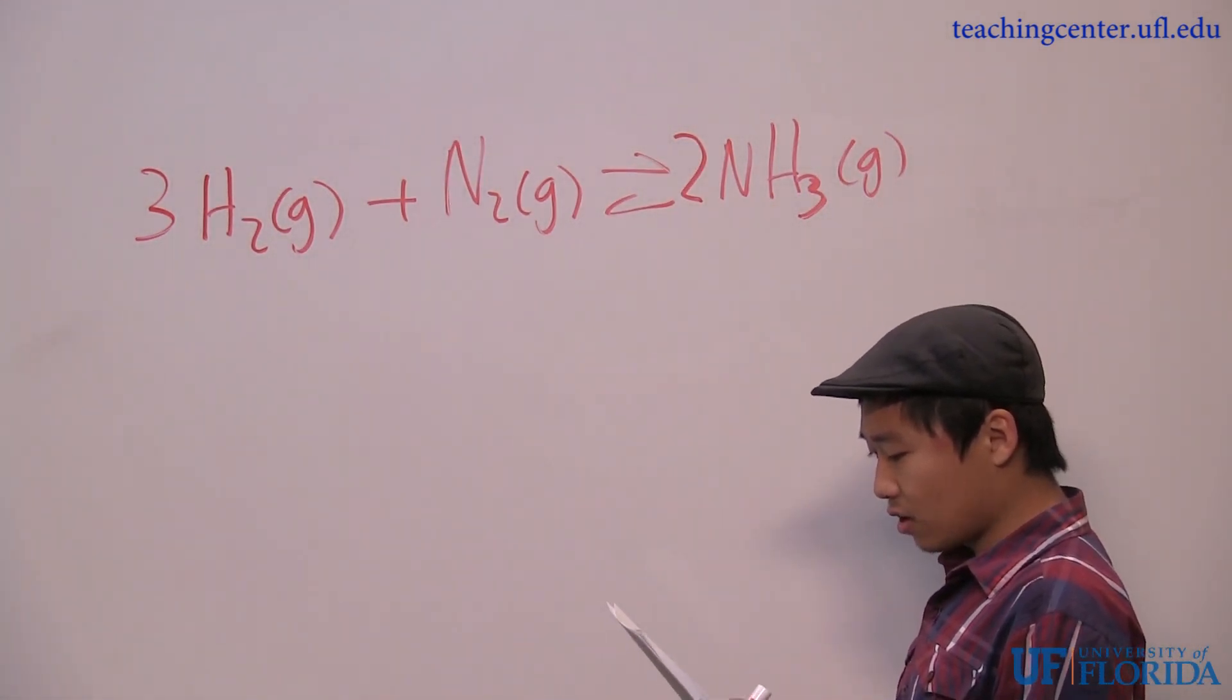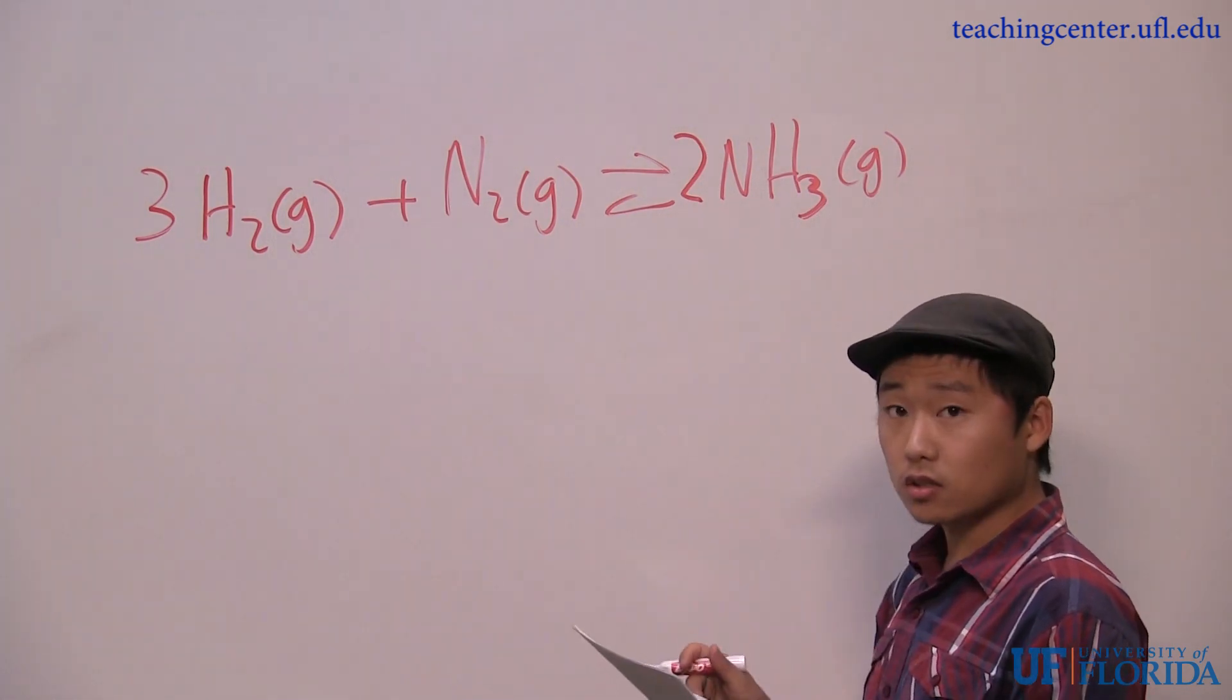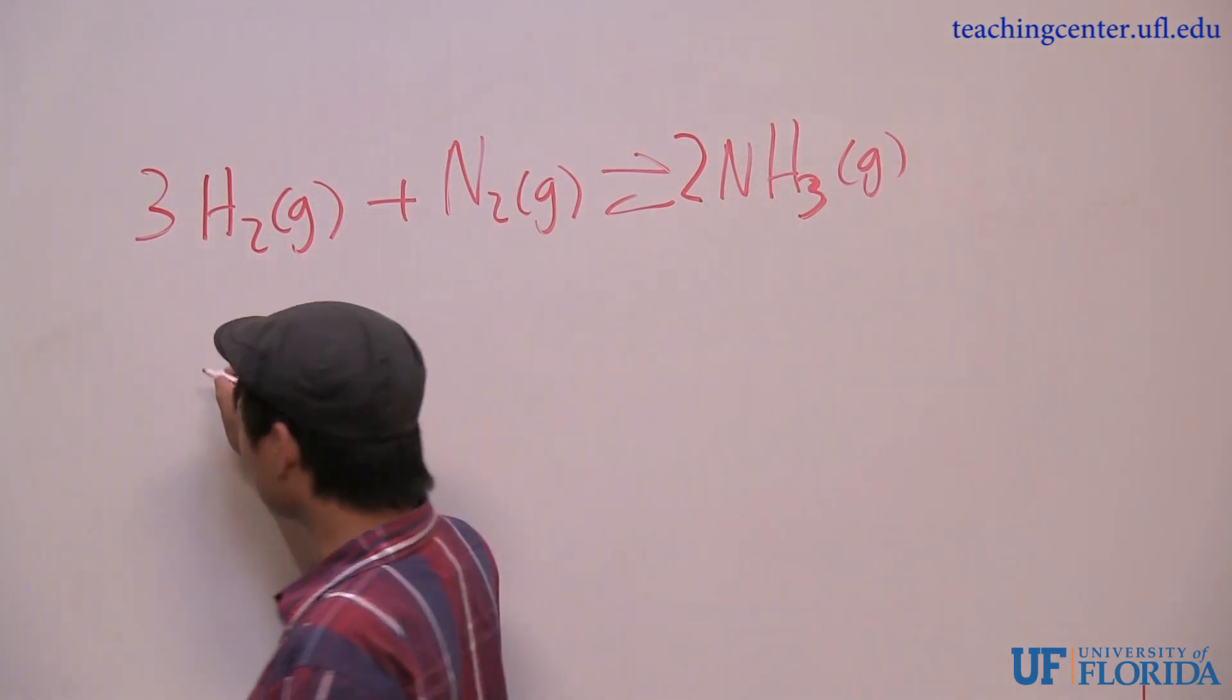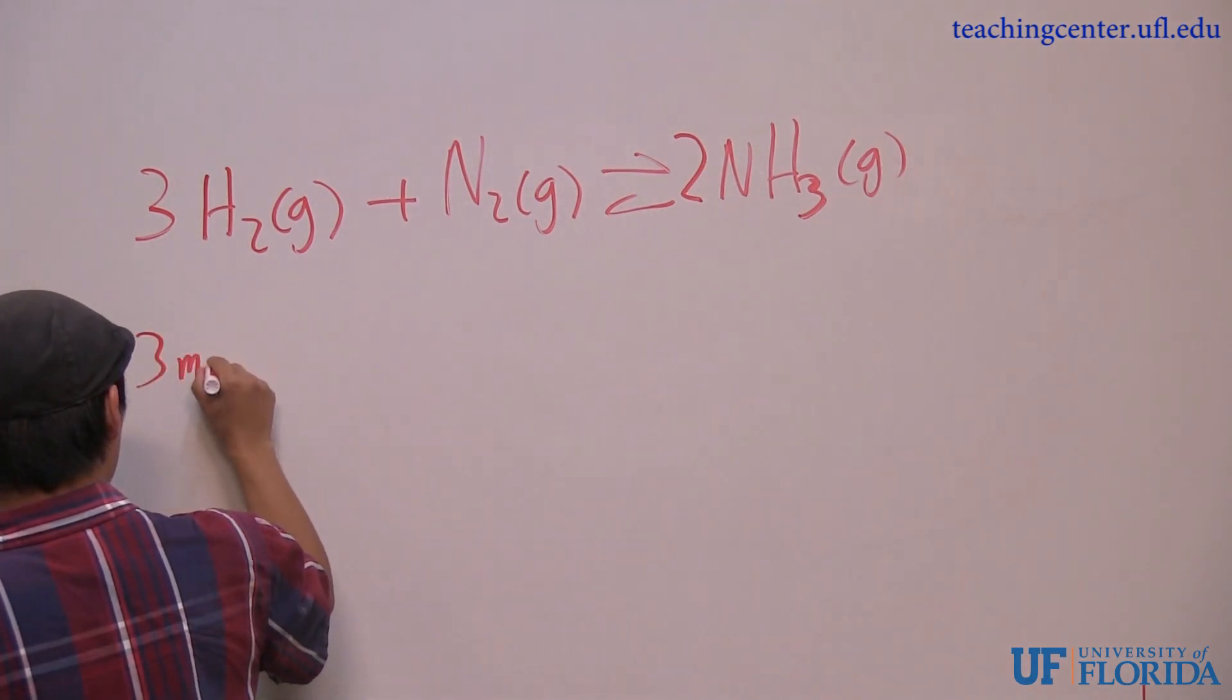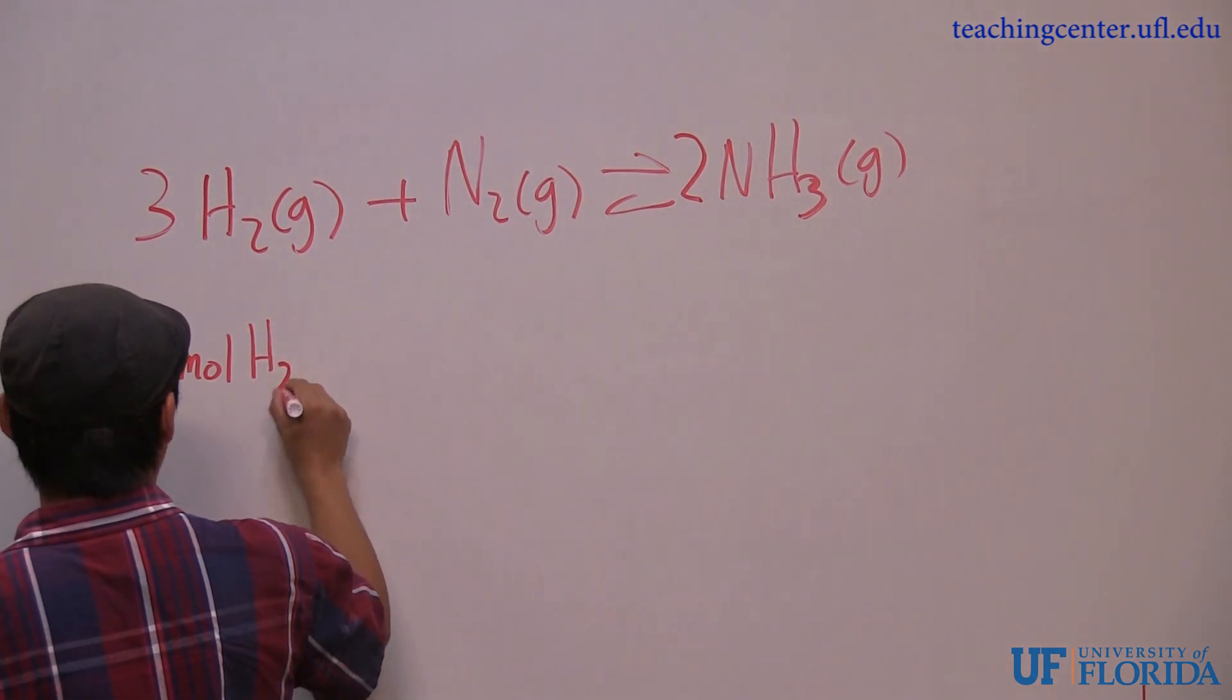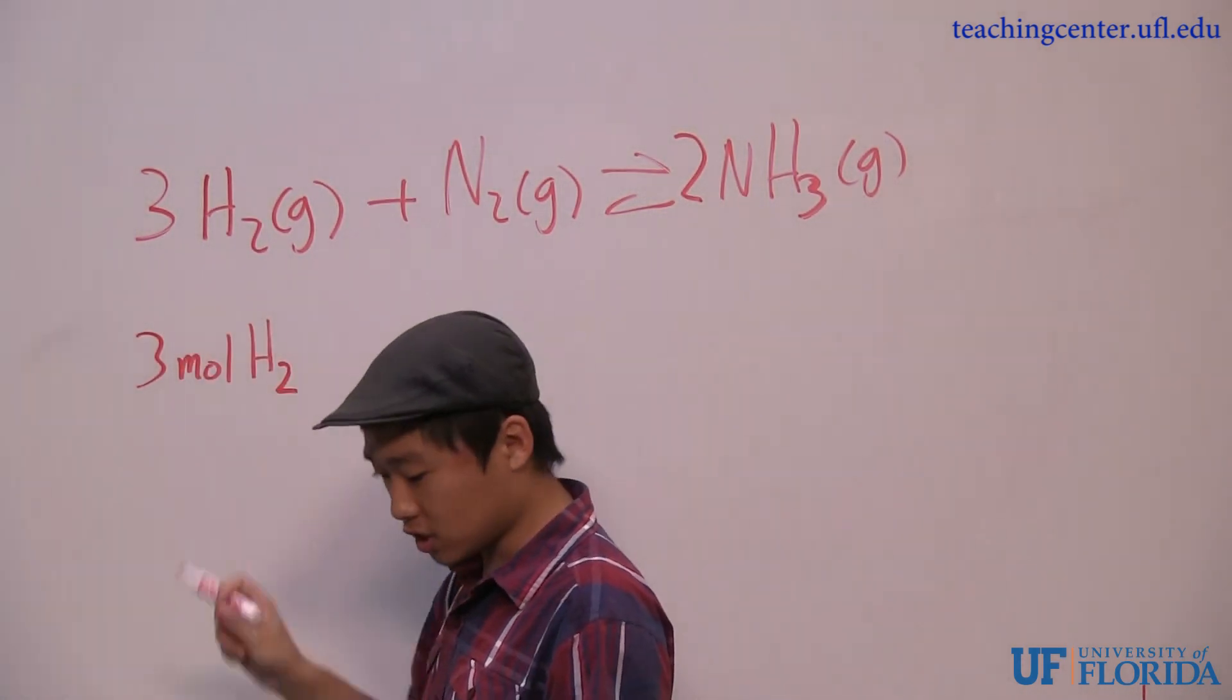It says here how many H atoms are needed for this equation. Let's think about it. We have three moles because of this coefficient. Actually, we have three moles of H2 because we're using H2, not just H.